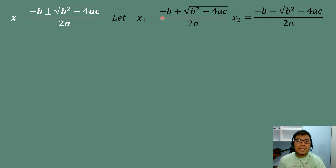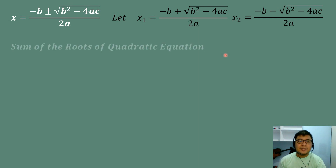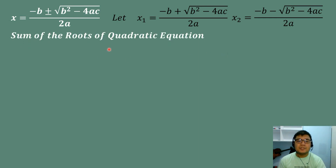X₁ will be equal to negative B plus square root of B squared minus 4AC all over 2A, while X₂ will be negative B minus square root of B squared minus 4AC all over 2A. Then, we will compute the sum and the product of the roots. Let's start first with the sum of the roots. To do that, we will just add these two roots, deriving the formula by adding the two roots of the quadratic formula.